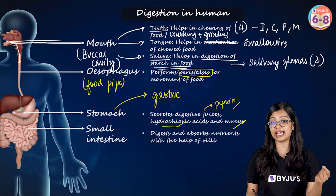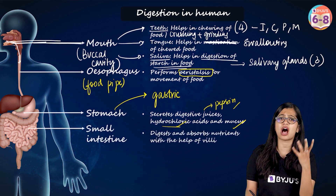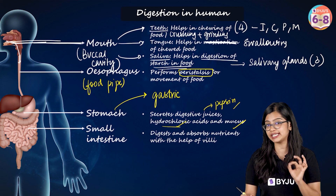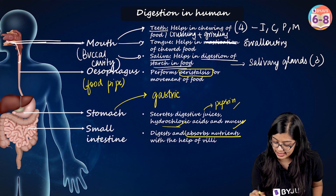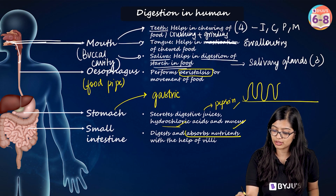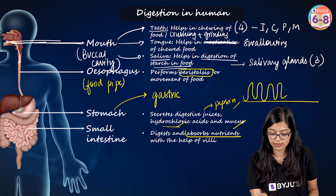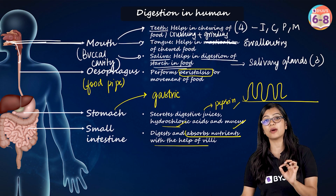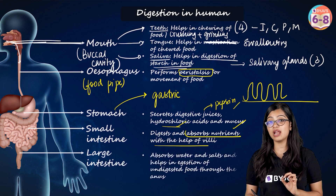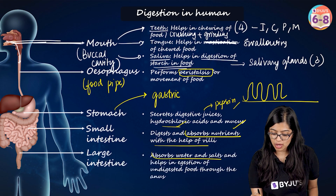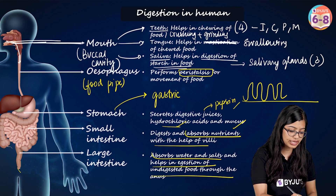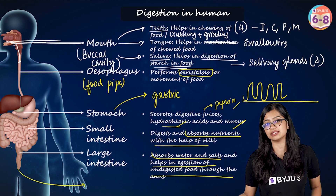The next part is the small intestine, which is a highly coiled structure where complete digestion takes place. The inner linings have finger-like projections known as villi that help with the absorption of nutrients. From here, the large intestine absorbs water and salts, and finally the undigested food is removed out through the anus.